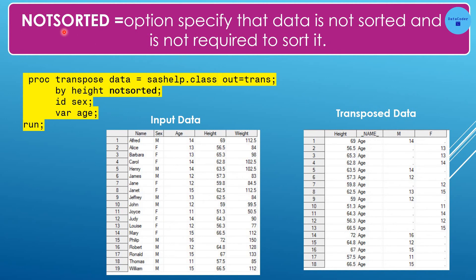If we don't want to sort the data set but still want to use the BY statement, we can use the NOTSORTED option. This tells PROC TRANSPOSE that the data is not sorted and sorting is not required. For example: PROC TRANSPOSE DATA=dataset OUT=out; BY Height NOTSORTED; RUN. Without NOTSORTED, we would get an error in the log saying the data set has not been sorted.